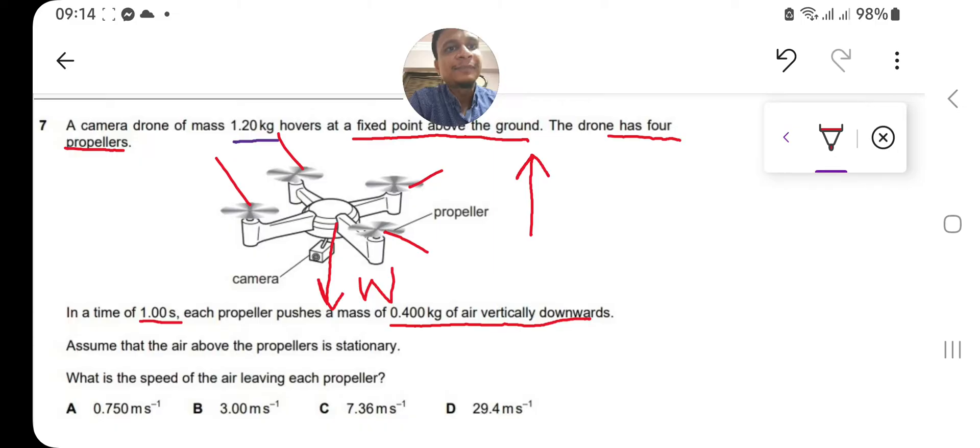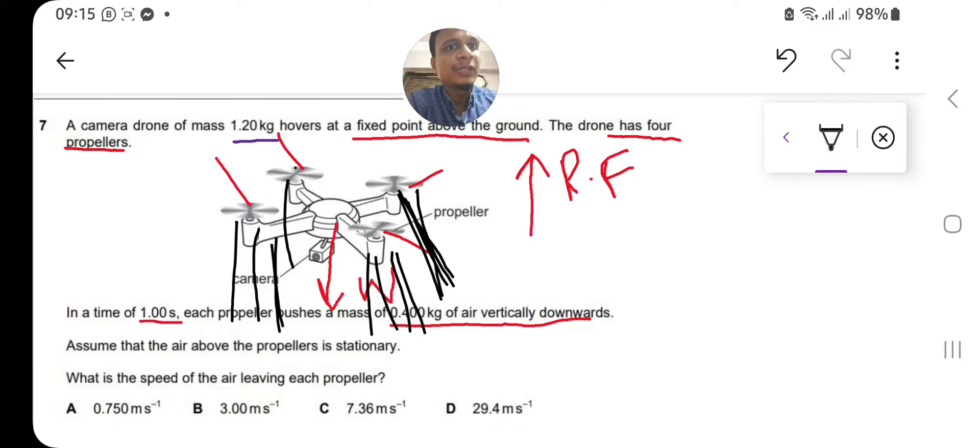We should have some unbalanced force so that it overcomes the weight of the drone, and then the leftover force will be the resultant force used to fly or hover the drone upwards. Each propeller pushes the air vertically downward. These black lines show they push air down to overcome the weight, which is the force of gravity acting on the drone.